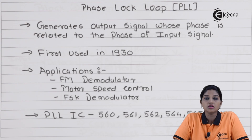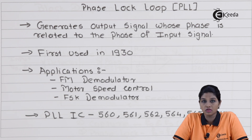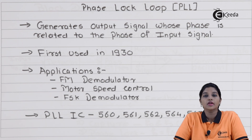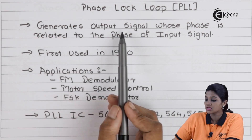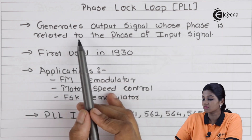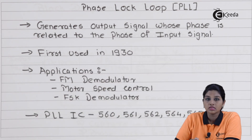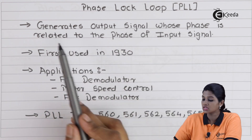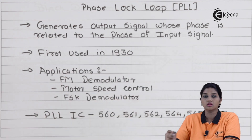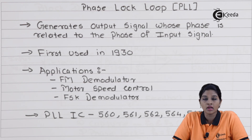PLL, that is phase lock loop, is a control system that generates an output signal whose phase is related to the phase of the input signal. It was invented in 1930. That means the phase of input and output varies with respect to each other.